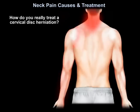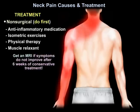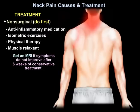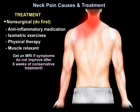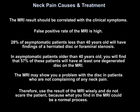How do you treat a cervical disc herniation? Start with non-surgical treatment first: anti-inflammatory medication, isometric exercises, physiotherapy, and muscle relaxants. Then get an MRI if symptoms do not improve after 6 weeks of conservative treatment. The MRI result should be correlated with the clinical symptoms.